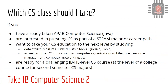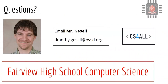IB Computer Science 2 is for students who have already completed AP IB Computer Science — it's the second-year continuation of that class. If you're interested in pursuing computer science as part of a STEAM major or career path, want to study data structures and other advanced computer science topics, and you're ready for a challenging IB HL-level class, then IB Computer Science 2 is your class.